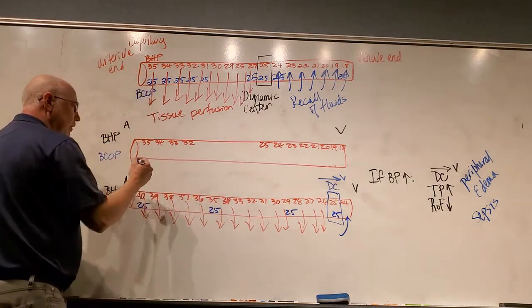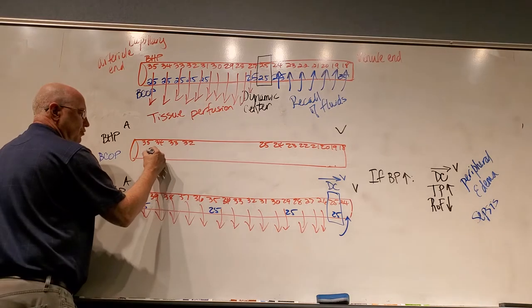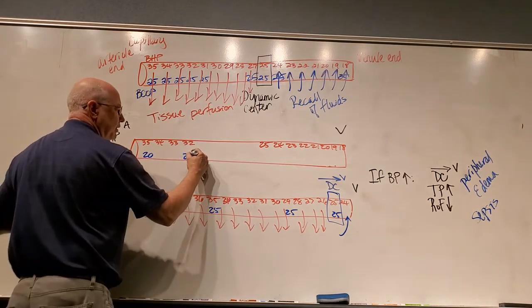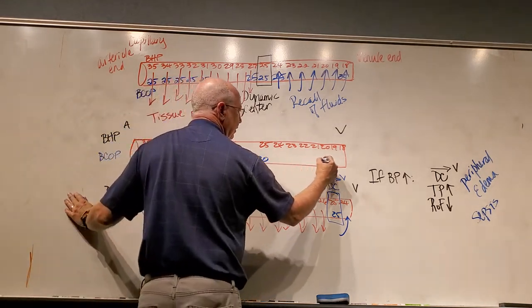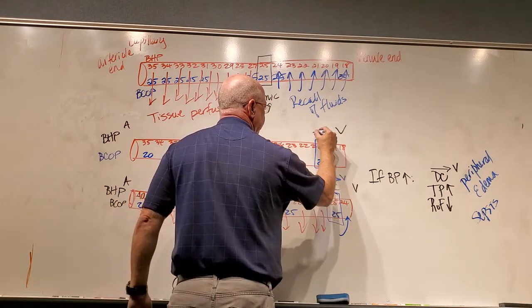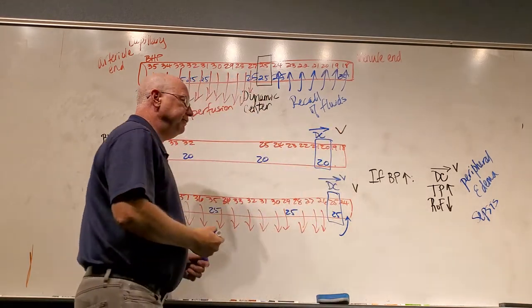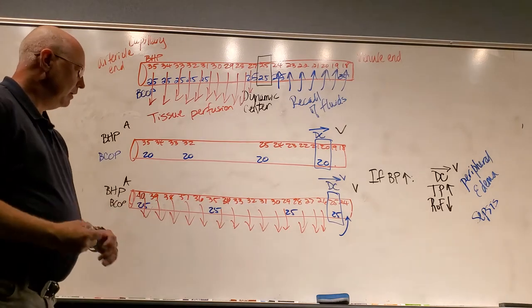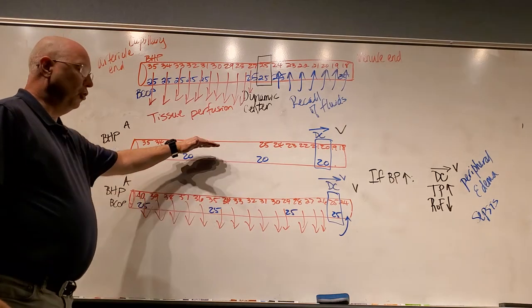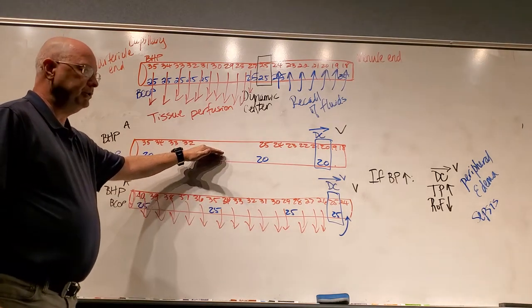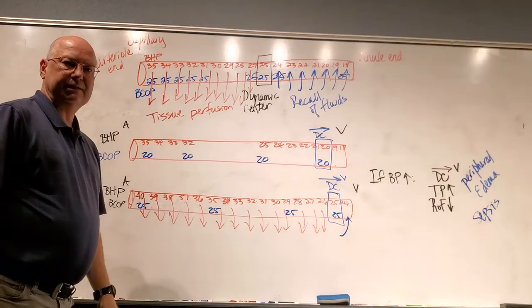So if my blood colloid osmotic pressure drops to, say, 20 millimeters of mercury, and I do that all the way down here, look what happens to my dynamic center. It is shifted towards the venial end. Again, a high blood pressure or a low blood colloid osmotic pressure results in the exact same conditions.